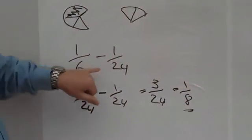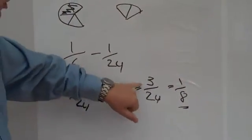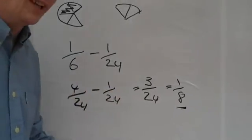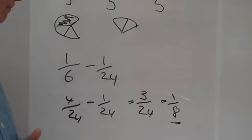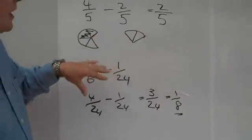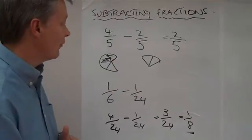So, the answer to one-sixth, take away one-twenty-fourth, is three-twenty-fourths, or really, we should make it as small as possible, which is one-eighth. That's how we can take two fractions away from each other.